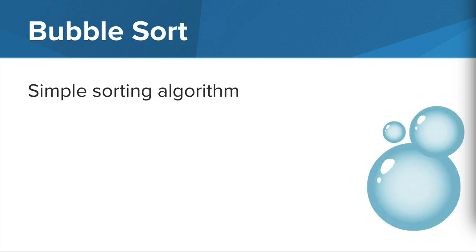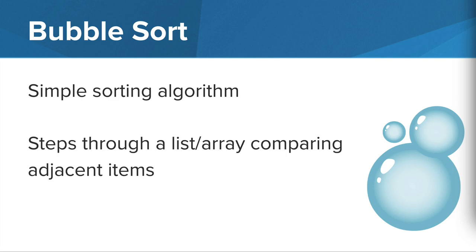Bubble sort is not the most efficient or fastest algorithm. So it's not really used but it is an easy to understand algorithm that is useful when introducing the topic of sorting. Essentially what this algorithm does is it steps through a list or an array comparing adjacent items. And if the items are in the wrong order, we swap them. It sounds pretty simple and that's because it is.